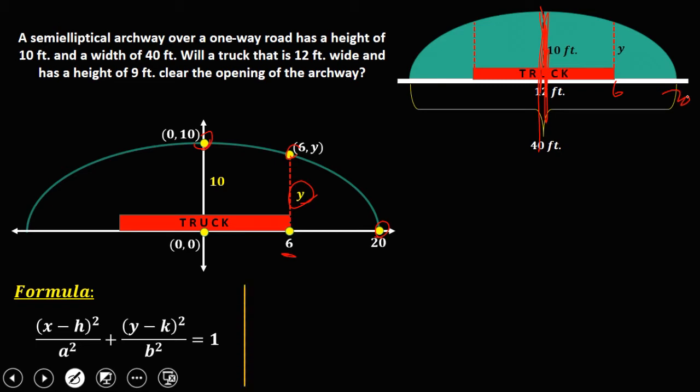Then to solve for the center, so the center of our ellipse is on the origin, that's (0, 0). And this center is (h, k), so h now is 0 and k is also 0.